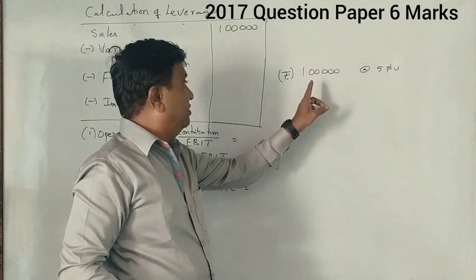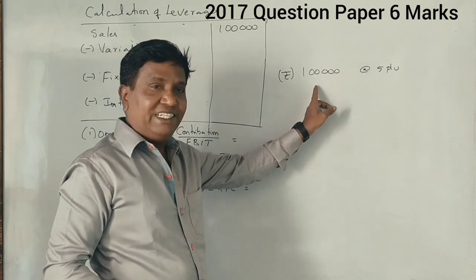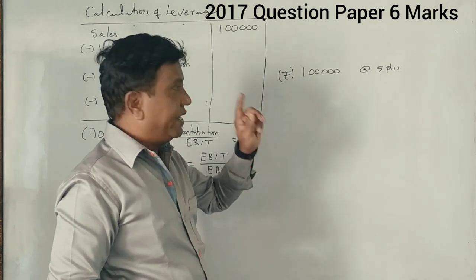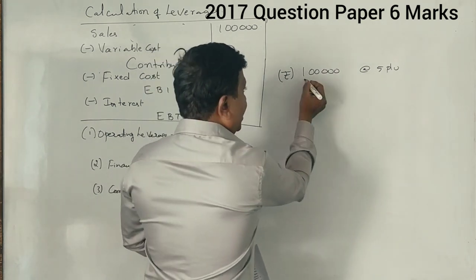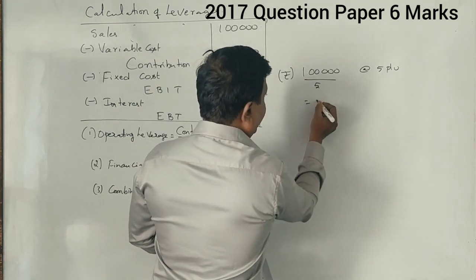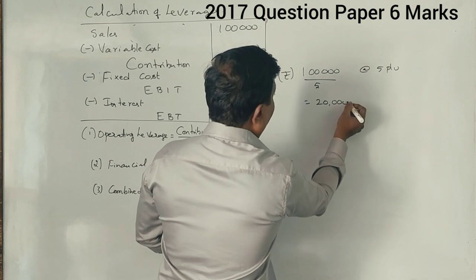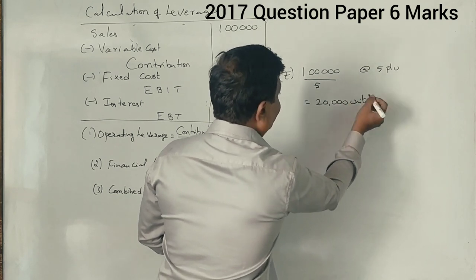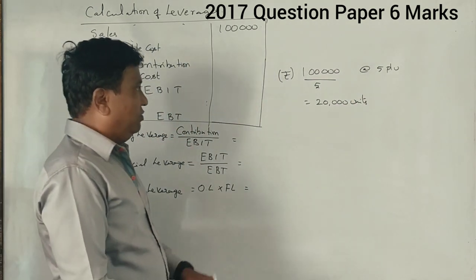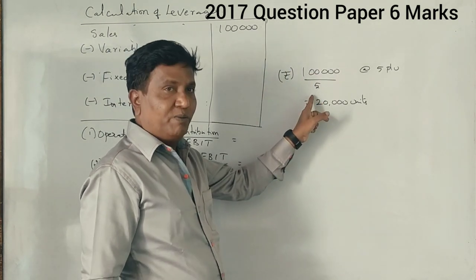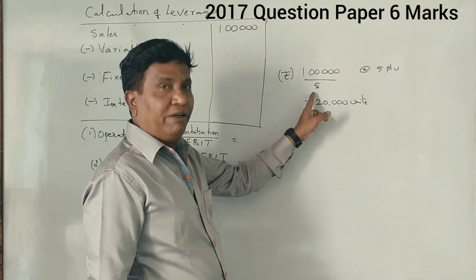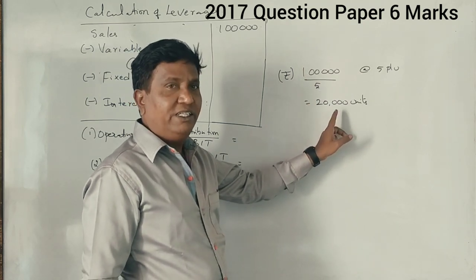Total sales is 1 lakh rupees. Per unit he sold is 5 rupees per unit. Now divided by 5 rupees, he sold 20,000 units. See, 1 lakh rupees we sold and we sold each unit for 5 rupees. So 1 lakh divided by 5 is 20,000 units he sold.